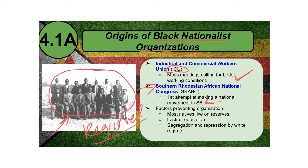This photograph shows the first leadership members of the S-RANC group — the gentlemen who would fight for the rights of black individuals to live in peace and harmony in Zimbabwe. However, factors prevented effective organization: most black people lived on reserves far from cities, they lacked education because the white regime prevented schooling, and segregation and repression by Southern Rhodesia prevented black people from effectively organizing.